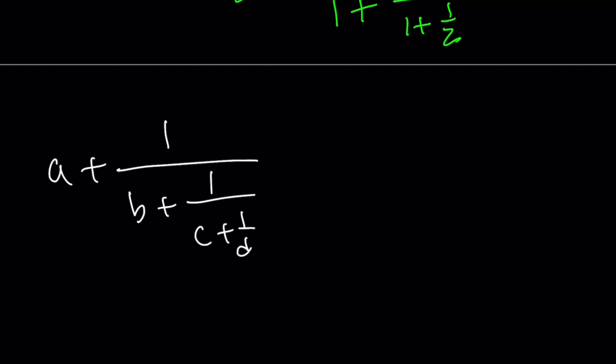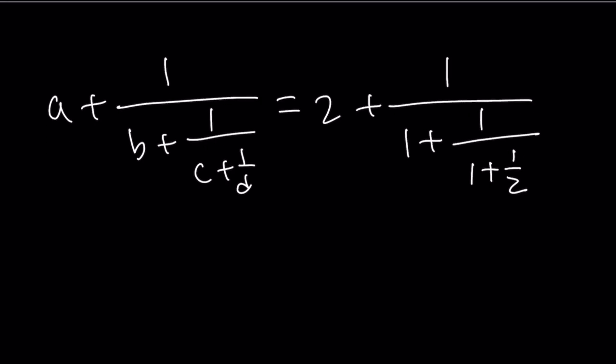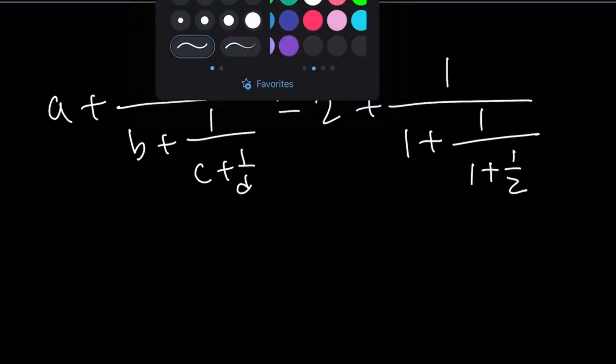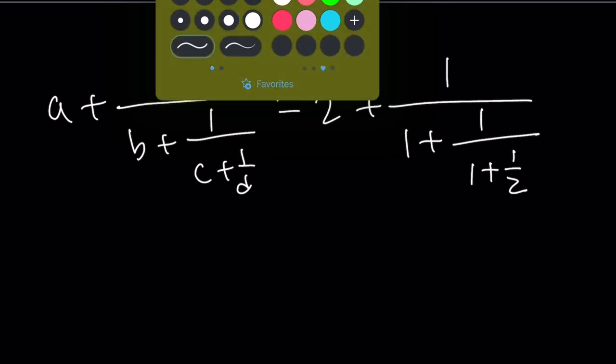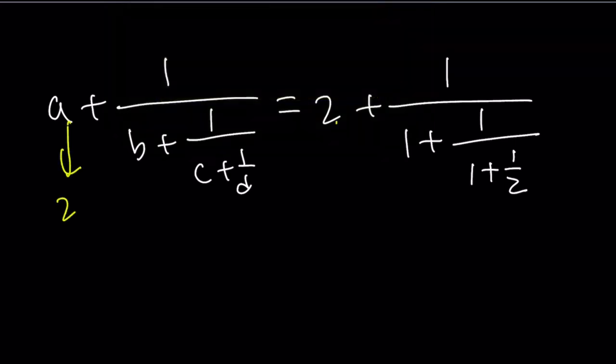The left-hand side gave us A plus 1 over B plus 1 over C plus 1 over D. Remember, A, B, C, D are all positive integers. If you try to write it differently, it's not going to work. Take a look at these. They are the same kind. Look at the structure, the format. So I can compare them easily because this is only going to happen if A is equal to 2, B is equal to 1, C is equal to 1, and D is equal to 2.